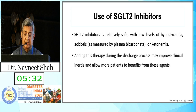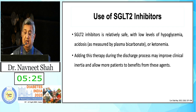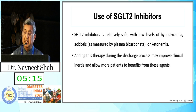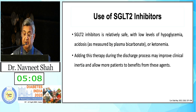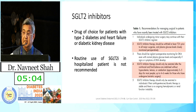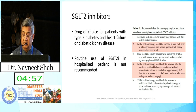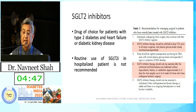The use of SGLT-2 inhibitors is a very hot topic today, because many patients with cardiorenal benefit are already on SGLT-2 inhibitors. They are relatively safe with a low risk of hypoglycemia and acidosis as measured by plasma bicarbonate or ketonemia. However, SGLT-2 inhibitor therapy should be withheld at least 72 hours prior to all major surgeries, with plasma glucose levels closely monitored perioperatively.